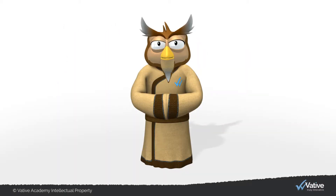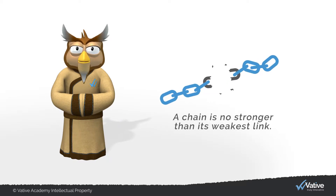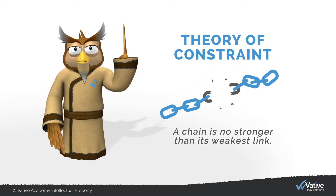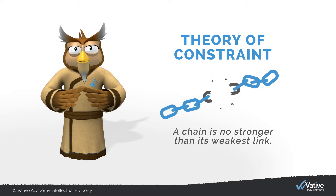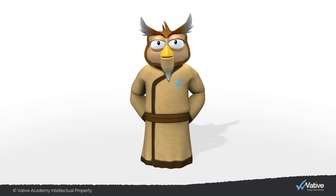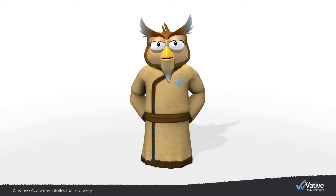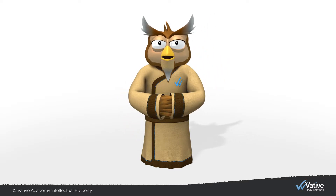You may have heard the expression that a chain is no stronger than its weakest link. This is basically the philosophy behind the theory of constraint. The idea is that every process step is like a link in the chain. If a process is not meeting the target, then it must have at least one weak link that prevents it from performing at the desired level. That weak link is called the constraint.